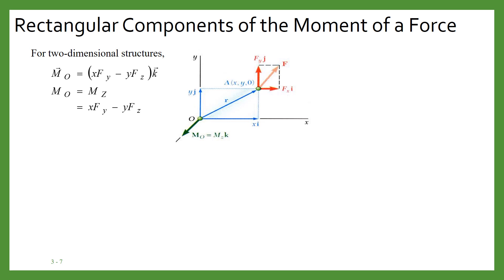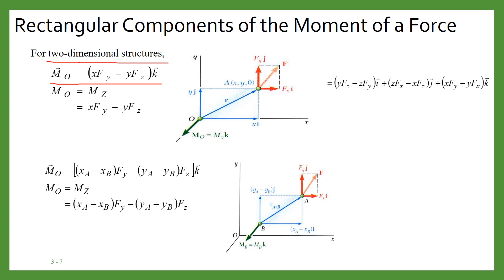Now let us see the rectangular components of the moment of a force for a 2D structure. This is your 2D structure, and the force F has two components FxI and FyJ. The moment will be (XFy − YFx) because the other two terms vanish. As seen in the 3D case, the terms involving Fz and Z are zero, so only the term (XFy − YFx) remains.